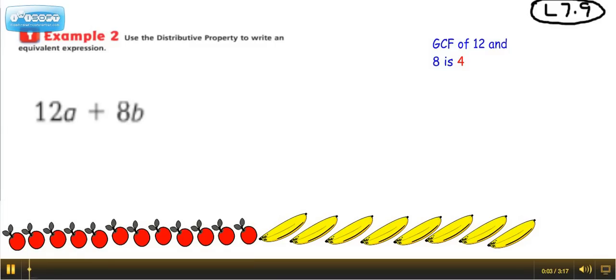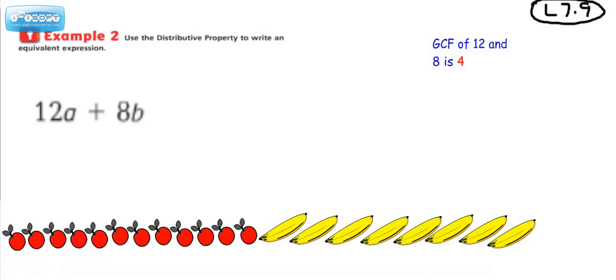Hey everybody, it's Ms. Dietrich helping you on Lesson 7.9. The directions in the example are: use the distributive property to write an equivalent expression. To help you understand what 12A plus 8B looks like, I thought I would model it for you down here at the bottom.